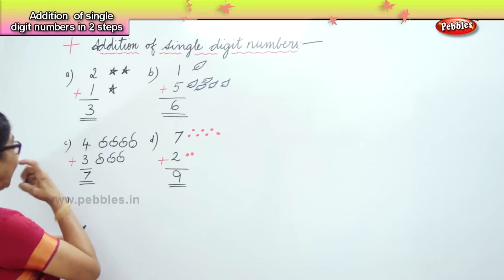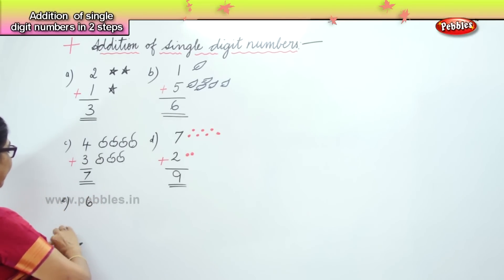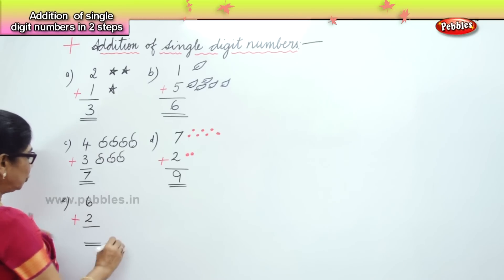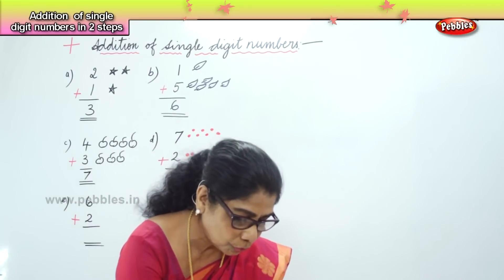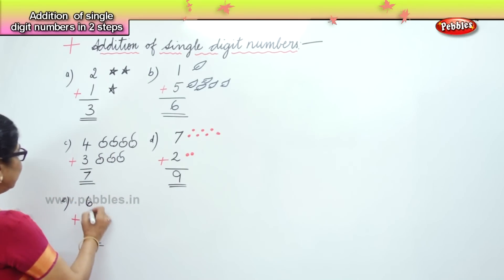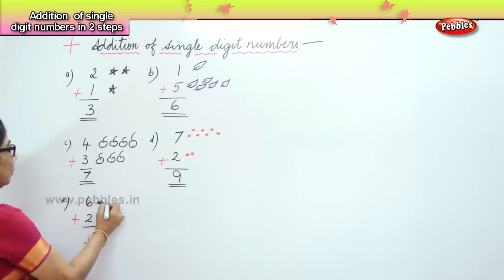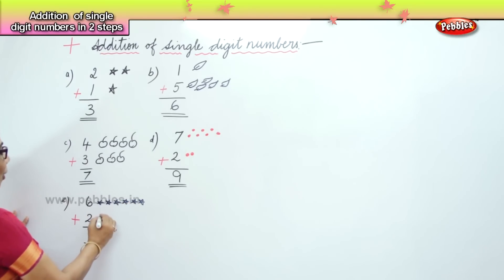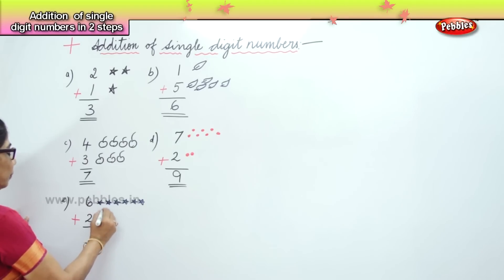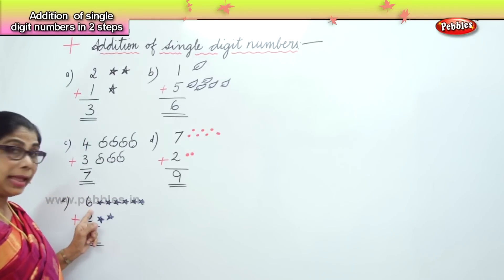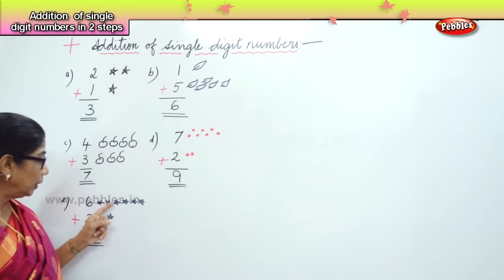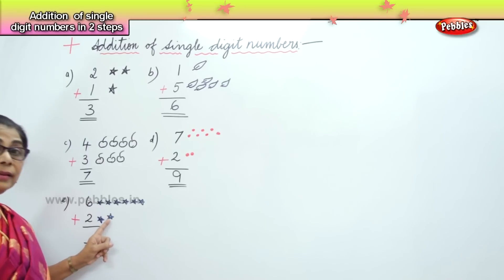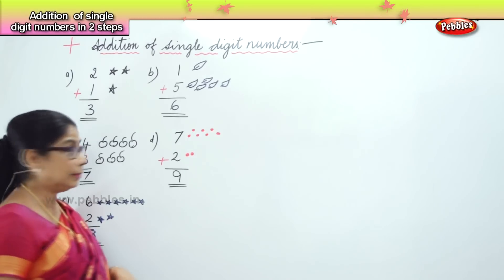Another sum: 6 plus 2. What is 6 plus 2? I'm going to draw some stars for you. 6 stars: 1, 2, 3, 4, 5, 6. And here 1 and 2. Count very carefully: after 6, 7, 8. Very good — you get the answer 8.